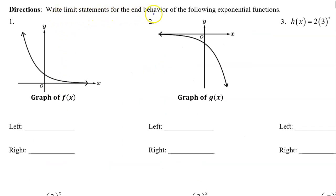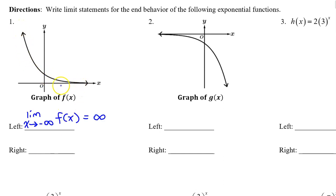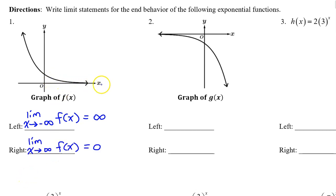Write limit statements for the end behavior of the following exponential functions. Problem number one. On the left, this function is rising, so the limit as x approaches negative infinity is infinity. On the right, this function is approaching the x-axis, the asymptote at the x-axis. So the limit as x approaches positive infinity is zero.